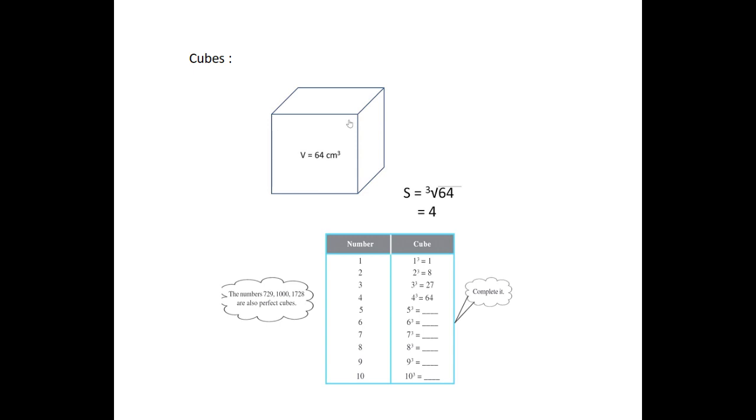Next, see the table which shows the cubes of numbers from 1 to 10. That is, there are only 10 perfect cubes from 1 to 1000.